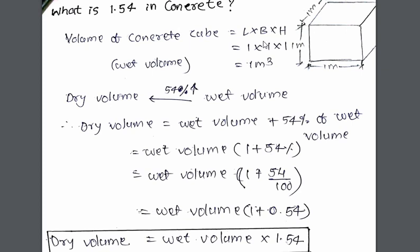So we should know the quantity of the dry material so that we can estimate the quantity and estimate the cost. We can calculate the dry value of any material from the wet value of the concrete. Any material means sand, cement and aggregate.